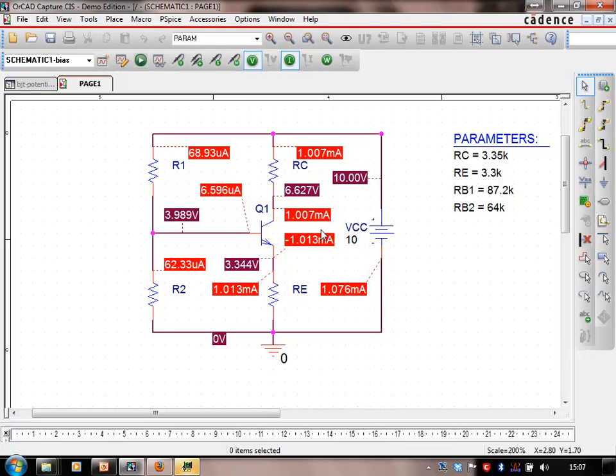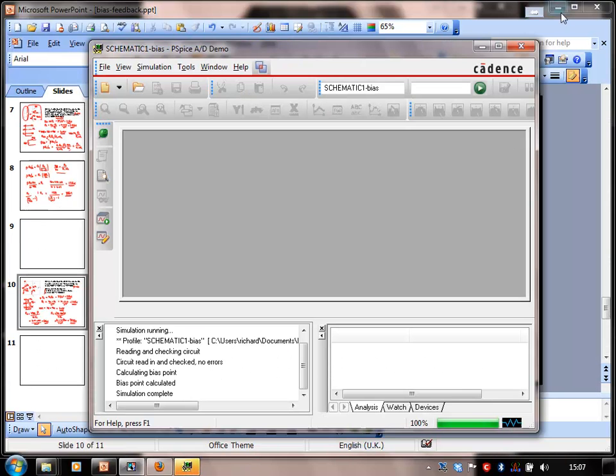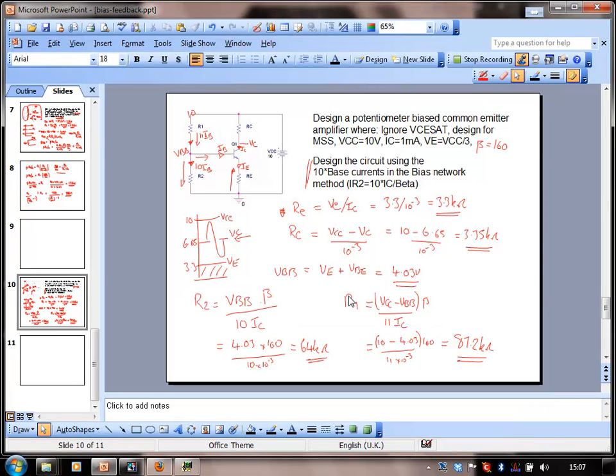So this method not only was faster, but it actually became a little bit more accurate in setting up to where we wanted to be. One of the reasons that this method actually tends to work a little bit better is because we're actually accounting for the base current flowing into the base as well as into the bias network, whereas previously with the Norton equivalent method, we didn't actually do that—we were sort of approximating those values. So that's the end of this screencast, and you've seen two ways of calculating the potentiometer bias.